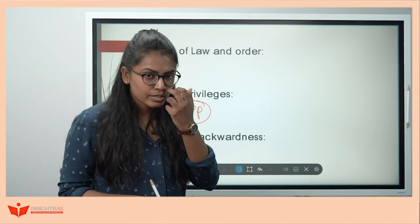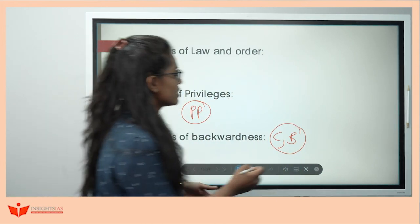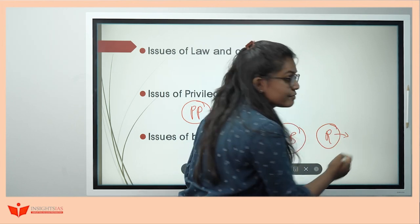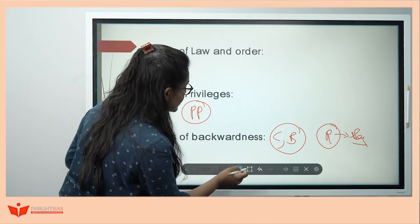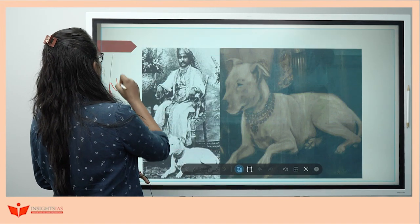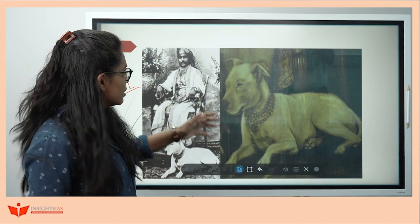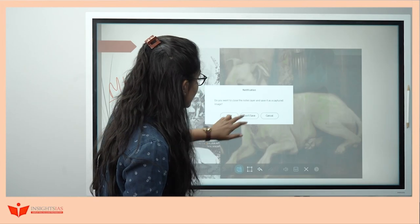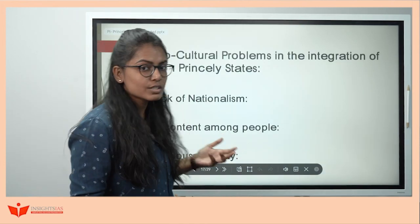Then the issue of backwardness: you can give the example of Kutch or Baroda state, which were quite prosperous, versus Rajputana states which were very poor and still followed serfdom. Another very interesting example is the ruler of Junagadh, Mahavat Khan, who spent 20 lakhs on his dog's wedding — he had 800 dogs. That shows how people were unhappy with their rulers. These type of examples, if you give, make the answer quite interesting.